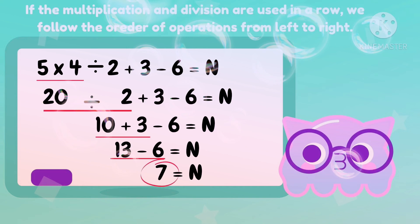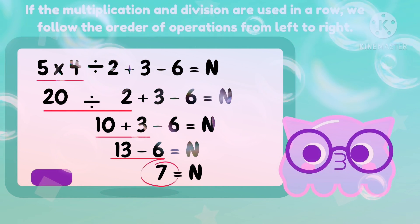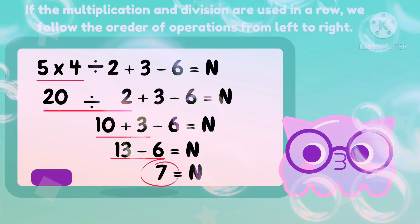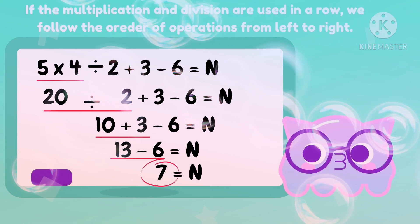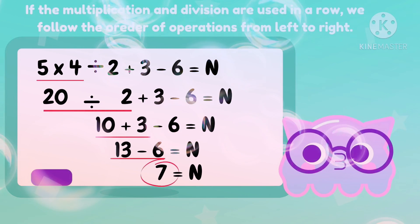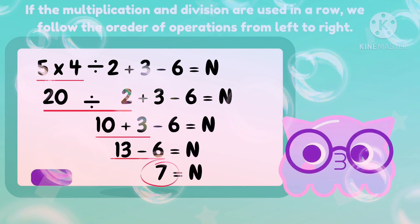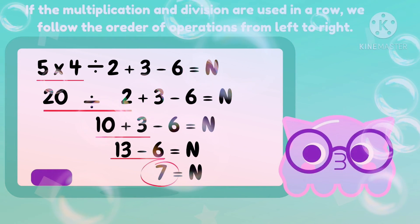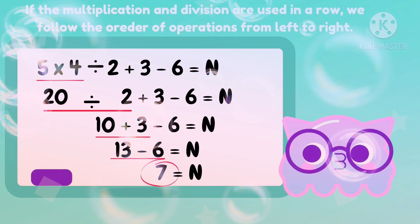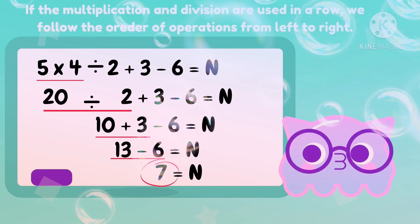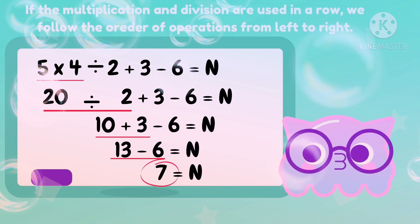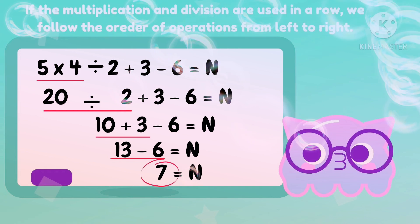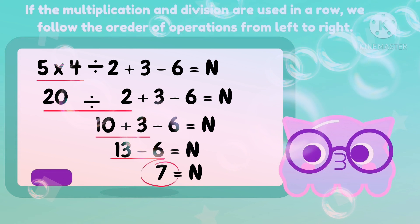Applying the MDAS rule, we multiply first from left to right. So 5 times 4 is 20. Then we copy the remaining numbers: 20 divided by 2 plus 3 minus 6 is equal to N. After multiplying, we proceed with division. Since 20 is divisible by 2, the answer is 10. Copy the remaining numbers: 10 plus 3 minus 6 is equal to N. Then, proceeding with addition or subtraction: 10 plus 3 is 13, minus 6 is equal to N. So N is equal to 7. The answer for the expression 5 times 4 divided by 2 plus 3 minus 6 equals N is 7.